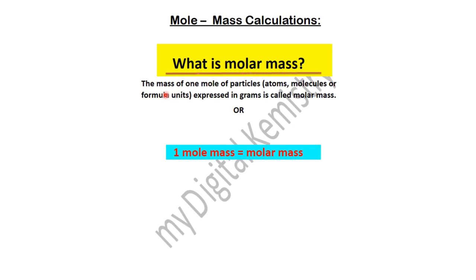The mass of one mole of particles — atoms, molecules, and formula units — expressed in grams is called molar mass. याद रखें कि one mole particle का mass, चाहे वो atom हो, molecule हो, या formula unit हो, जब इसे grams में express किया जाता है तो ये molar mass कहलाता है।